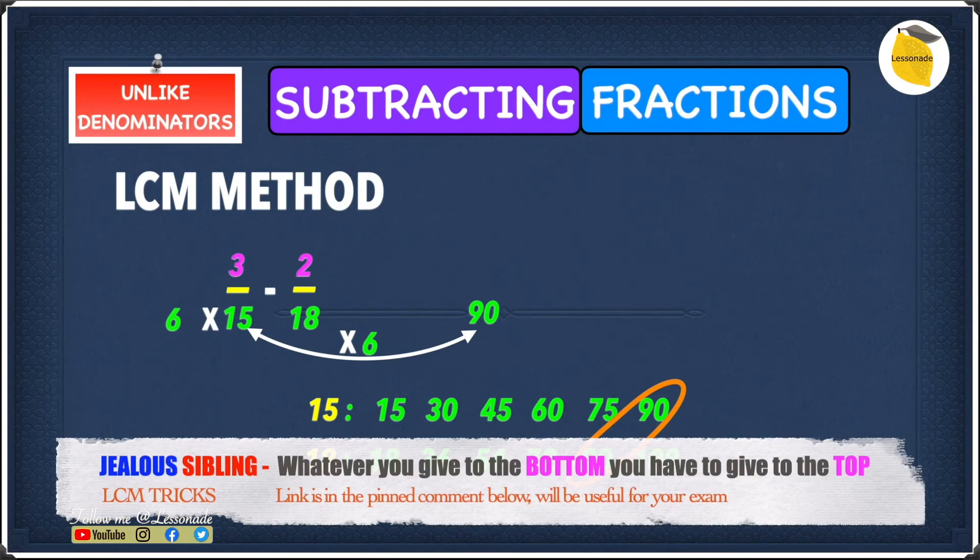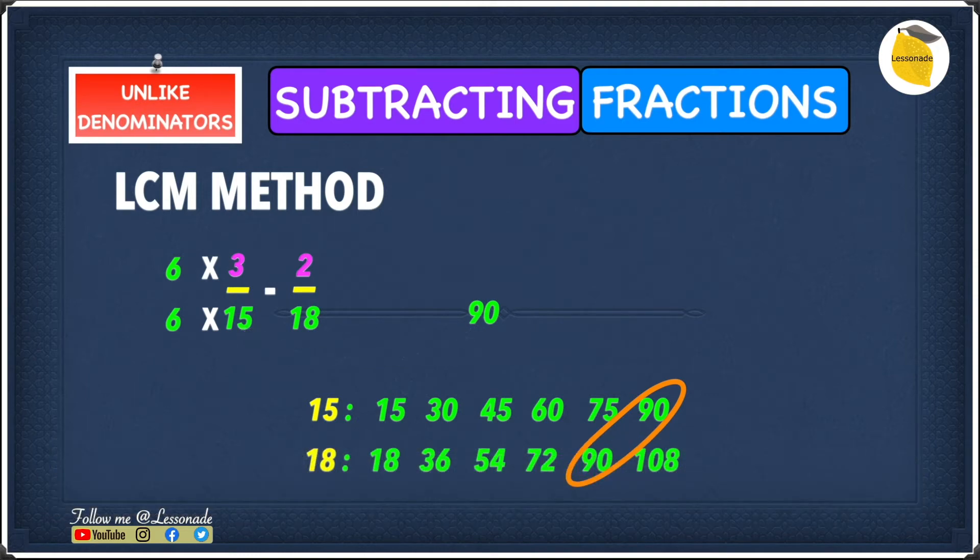Because we are multiplying the bottom number which is 15 by 6, we also have to multiply the top number by 6 because whatever you do to the bottom number you have to do to the top number. So we know that 6 times 15 is 90 and 6 times 3 is 18, so this means we get 18 over 90.